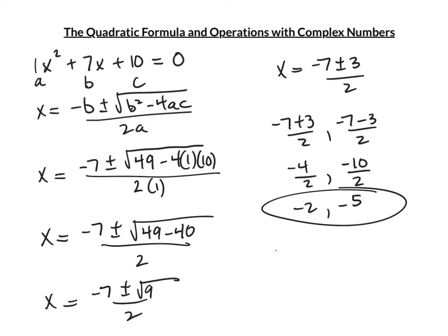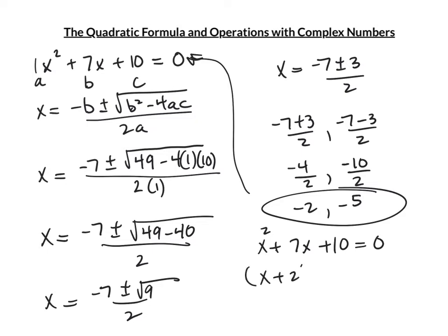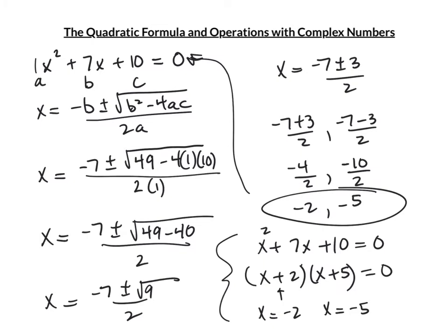I want to point out that when you get a question like this, the first thing you should do is see if it factors. x² + 7x + 10 = (x + 2)(x + 5) — factors of 10 that add to 7 are 2 and 5. The answers are x = -2 and x = -5. If it factors, do it that way — the quadratic formula is for messy questions.